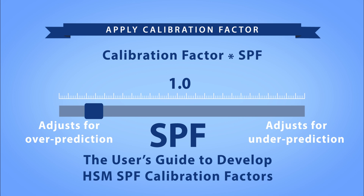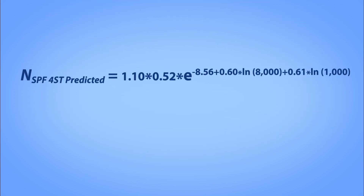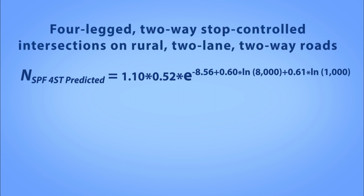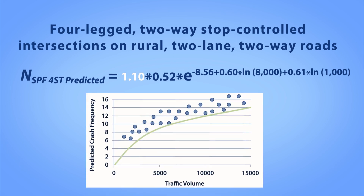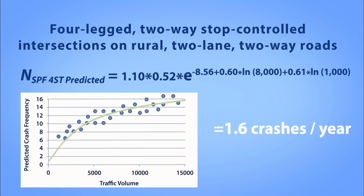Calibration factors greater than 1.0 indicate the SPF is under-predicting crashes for local conditions and there is a need to inflate the predictions. Calibration factors less than 1.0 indicate the SPF is over-predicting crashes for local conditions and there is a need to reduce the predictions. You can refer to the User's Guide to Develop HSM SPF Calibration Factors for further guidance. As an example, assume your calibration factor for four-legged, two-way, stop-controlled intersections on rural, two-lane, two-way roads is 1.10 — greater than 1, indicating the adjusted SPF is under-predicting crashes for local conditions. Applying this calibration factor, the predicted crashes is 1.6 per year.